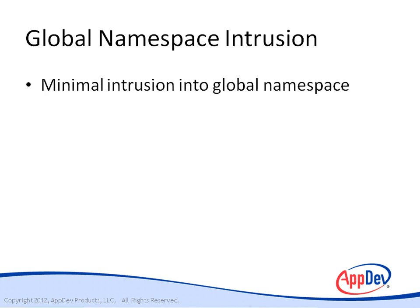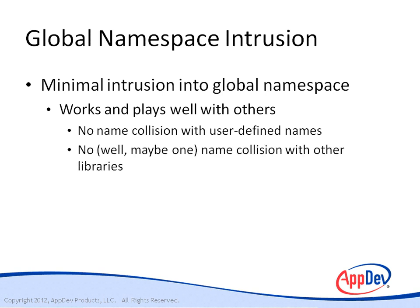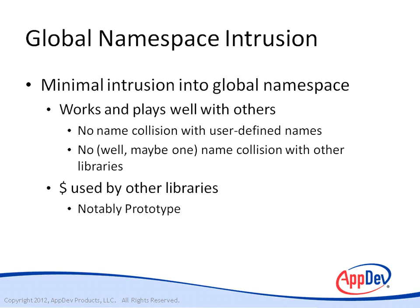This aversion to polluting the global namespace is a core design decision for jQuery. By minimizing the number of names introduced, jQuery avoids accidentally using up names that page authors might also be using. And when it comes to using multiple libraries on the same page, it avoids colliding with names defined by other libraries.